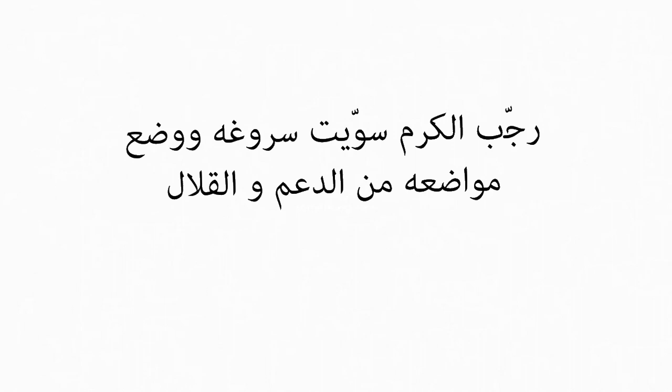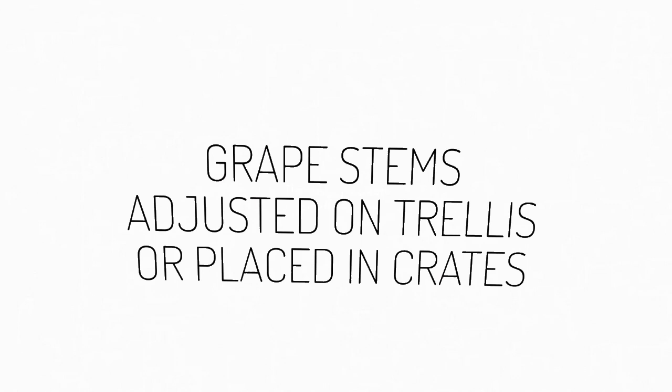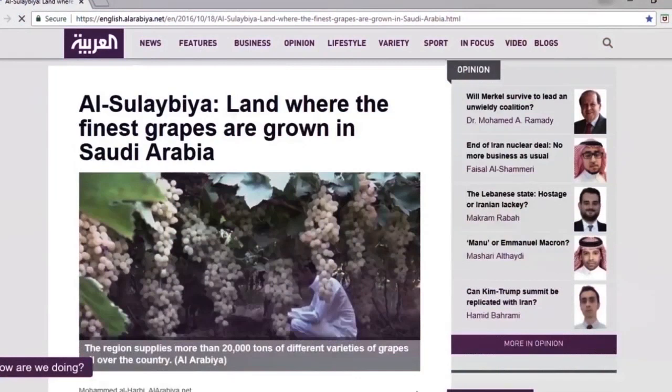Next comes the month of Rajab. One definition reads: 'Rajab al-Karmu suwwiyat suruhu wa wudhi'a ma wudi'ahu min al-di'am wal-qilal. Wal-Rujb ma bain al-dila'i wal-qassi' — meaning adjusting the grape stems and putting them on trellis or in containers, and the second definition refers to supporting a heavy load to picking. In other words, Rajab describes the process of grape harvest. This makes sense given that in Saudi Arabia, the seasonal production of grapes begins in mid-July.